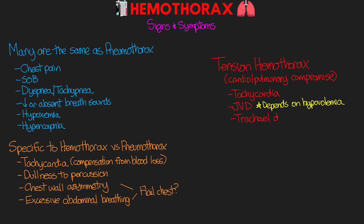They can have that same tracheal deviation away from the affected side. Cyanosis can be present, along with profound hypoxemia and hypotension, as well as respiratory failure and potentially cardiac arrest.